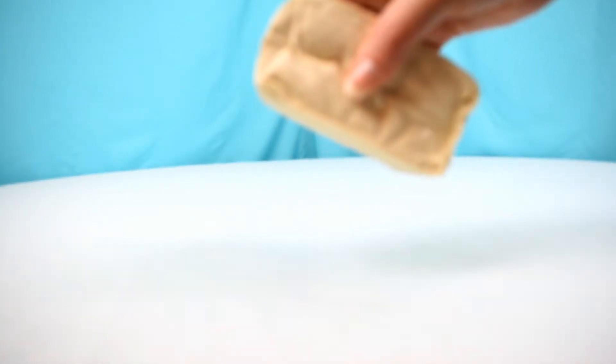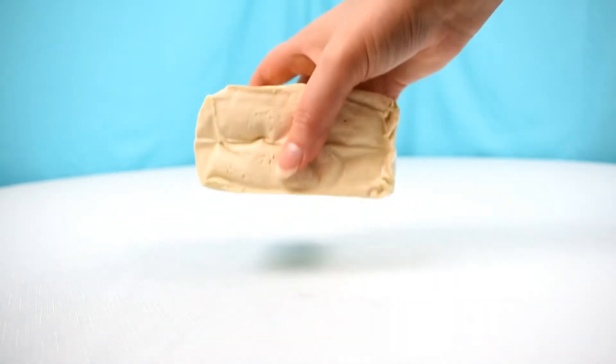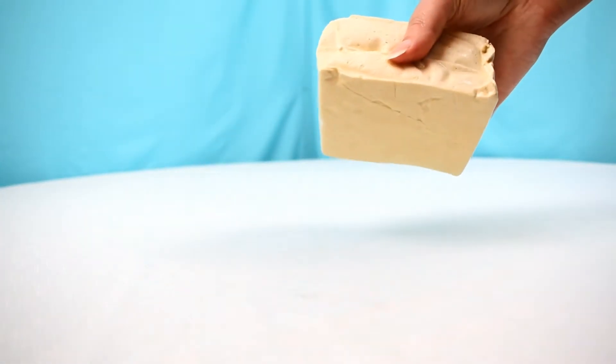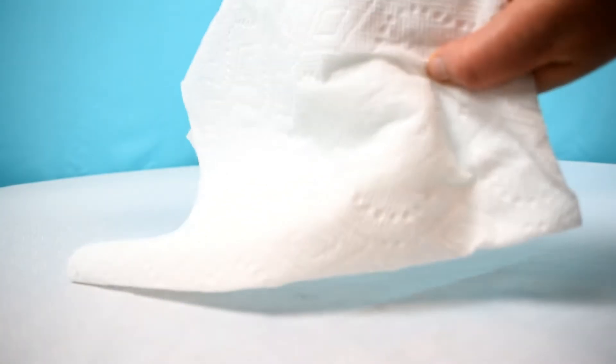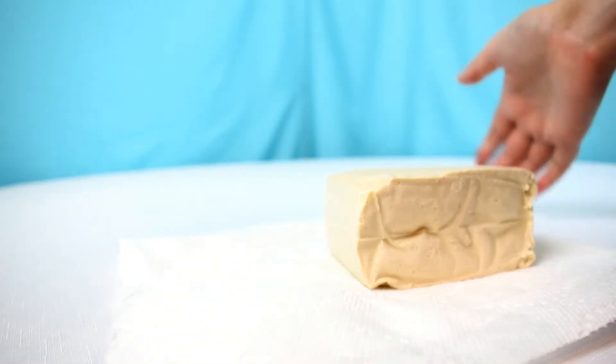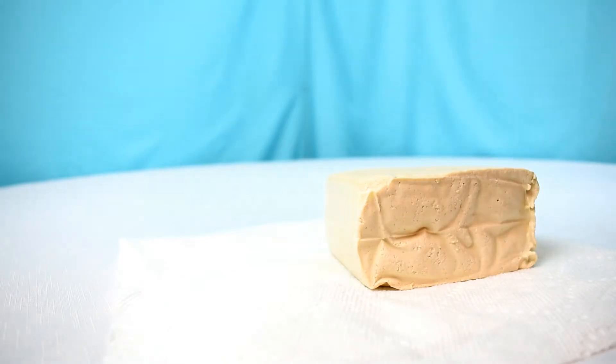So all I did was pour the liquid out and remove the block of tofu. There's nothing dripping from it. If I had done this with the other block, it would have had water dripping from the tofu. I mean you really can't even tell that it made the paper towel damp. So thankfully you do not have to press this one at all.